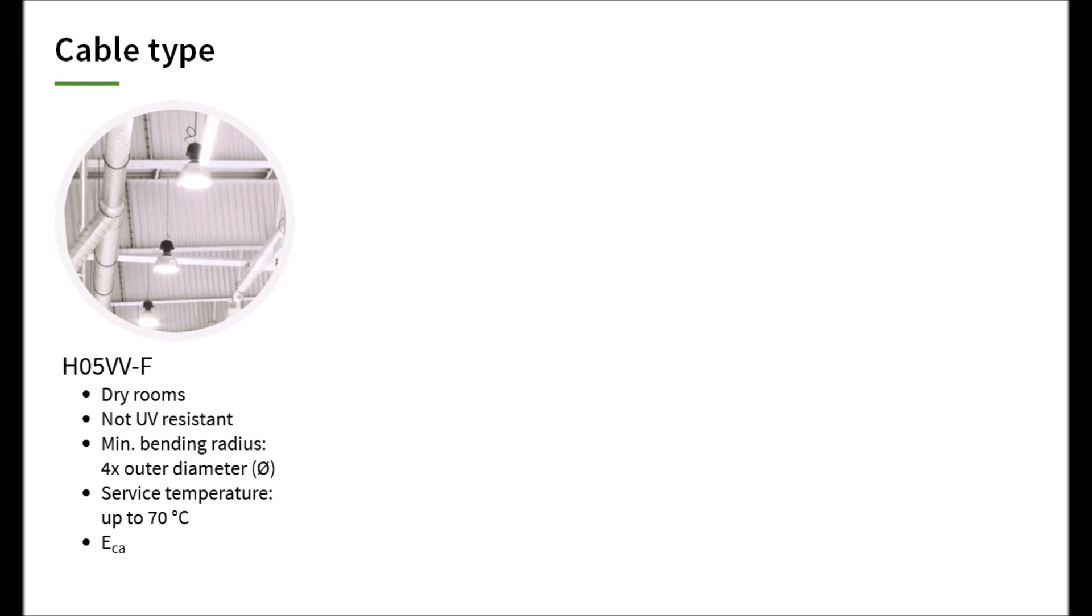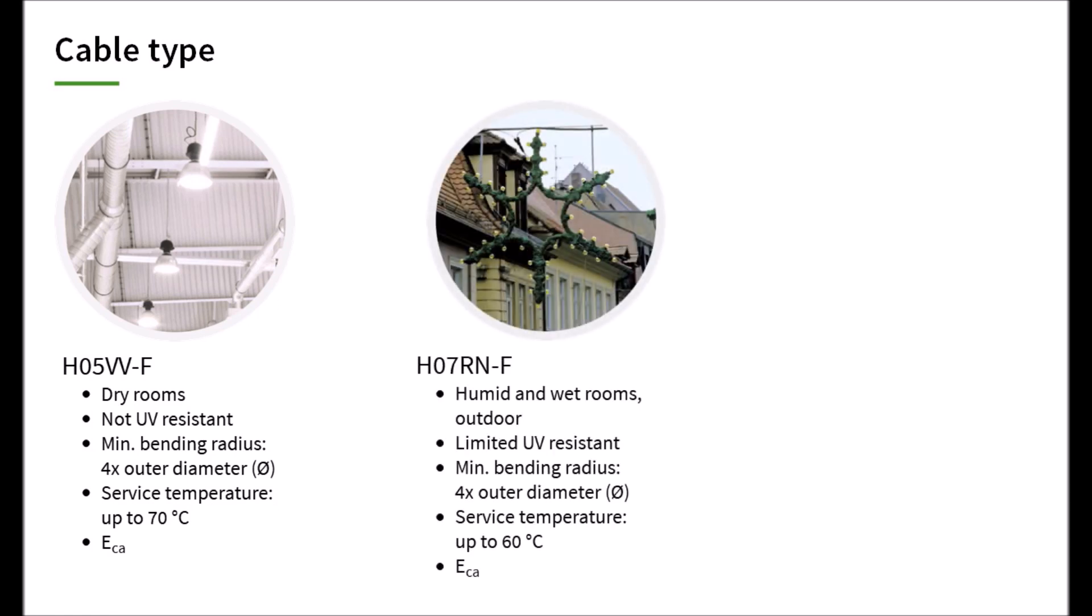The H05VVF cable is often used indoors, where there is dirt, but usually not damp or even wet. The protection against dust, IP6X, is the main focus here. Temporary wetness for cleaning purposes is possible. Outdoor installations without special requirements can be realized with the rubber hose cable H07RNF, whereby it must be checked whether additional measures, such as laying in installation pipes, are necessary.